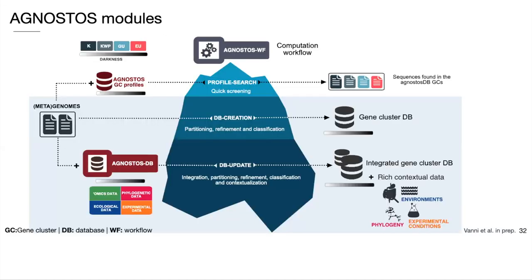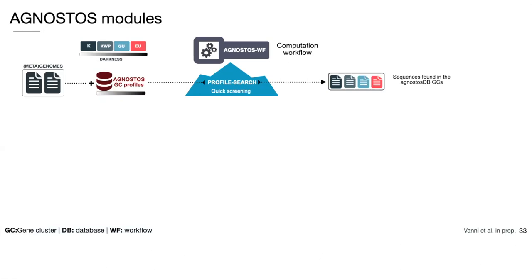Overall, Agnostos provides a comprehensive analytical environment to partition and explore the coding sequence space. The different modules allow investigation of the coding sequence space of genomes and metagenomes at different depth levels. Starting from the surface, if you want a first overview of your metagenomic or genomic dataset, you can perform a profile search using your amino acid sequences against the Agnostos gene cluster profiles, which returns the classification of your sequences into the four categories according to homologies to the search gene clusters.